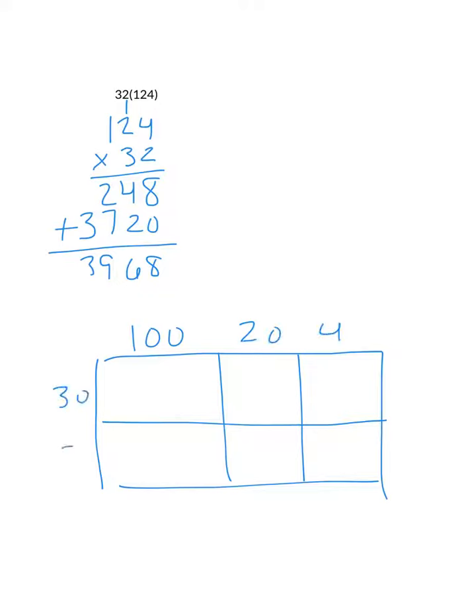You have your 32. Now, 30 times 100 is 3,000. 30 times 20 is 600. 30 times 4 is 120. 2 times 100 is 200. 2 times 20 is 40. 2 times 4 is 8.